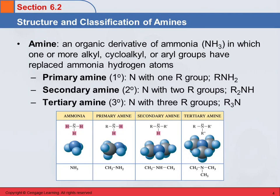Structure and classification of amines. An amine is an organic derivative of ammonia. We talked about how alcohols and ethers can be thought of as derivatives of water, where the hydrogens on the oxygen are substituted. The parallel idea here is with ammonia.